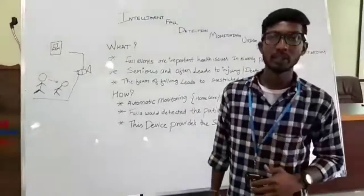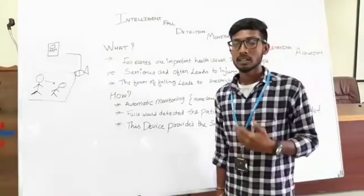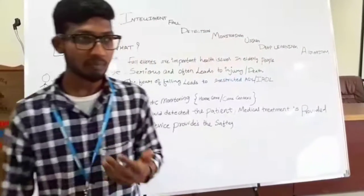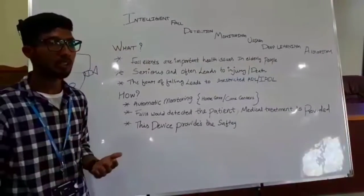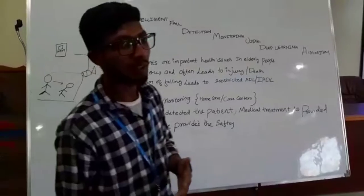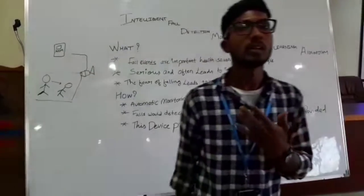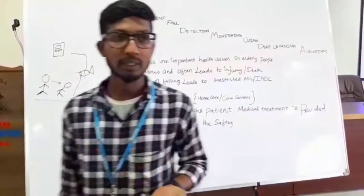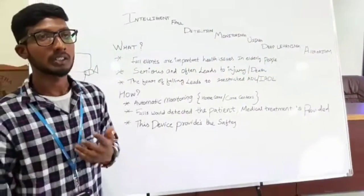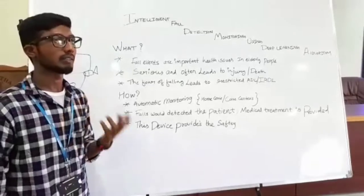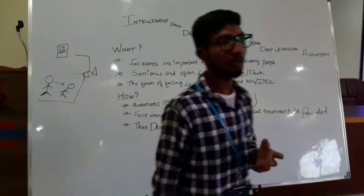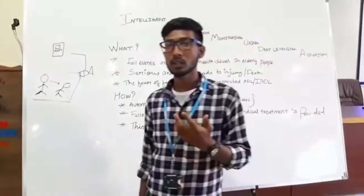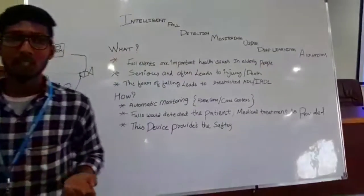In this system, there will be live video streaming. Using that live video stream, we will detect the postures of the person using convolutional networks, and if a person falls, the system can capture images of the person.